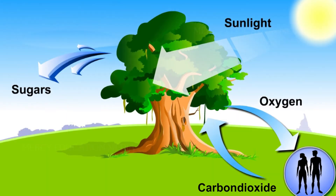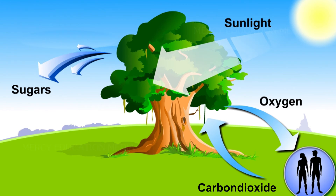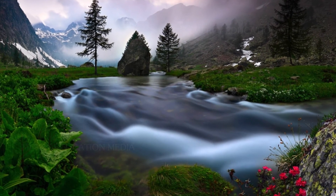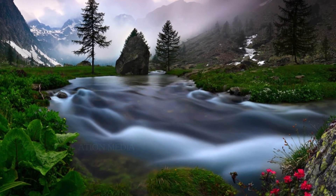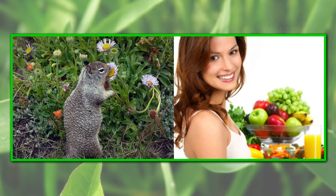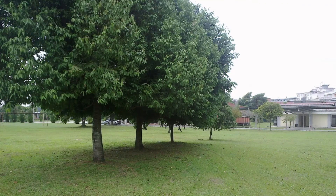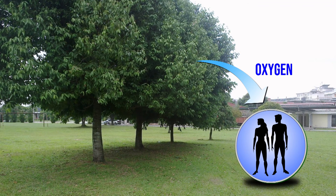Green plants have the capacity of harvesting light energy for life energy making use of inorganic raw materials. Most of the living organisms including man depend upon this energy rich compounds of plants. Plants not only provide food but also supply required oxygen for breathing.